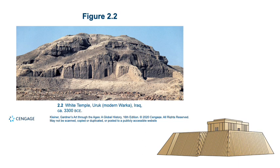The tallest known temple was at Babylon — we'll talk about that in more detail later — and it was 270 feet high. The Hebrews called it the Tower of Babel, and it became the centerpiece of a biblical story about the arrogant and disrespectful pride of humans.